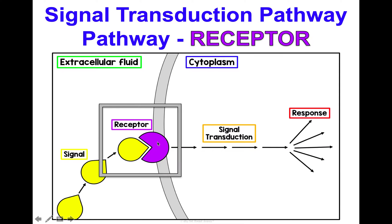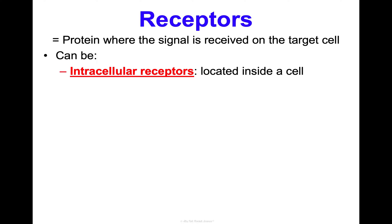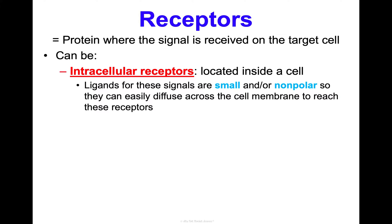So that's an overview of signaling. Let's talk about receptors and what's receiving these ligand molecules. A receptor is a protein where the signal gets received on the target cell. Receptors can be intracellular — inside of the cell. If a receptor is inside the cell, whatever the ligand is has to be able to cross the cell membrane, so these ligands need to be small and/or nonpolar to diffuse across easily. In the pictures I've been showing, we've been looking at membrane receptors — located on the surface of the cell — for signals that are large and/or polar that can't diffuse through the membrane.